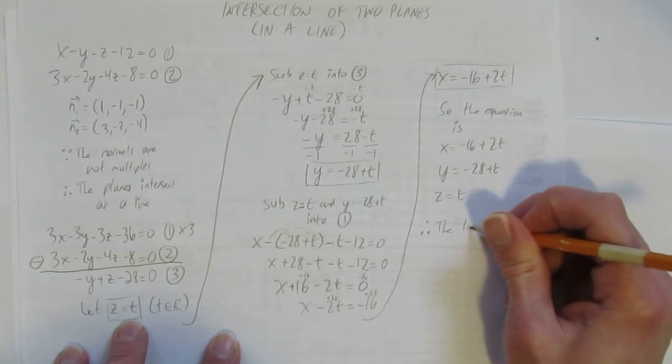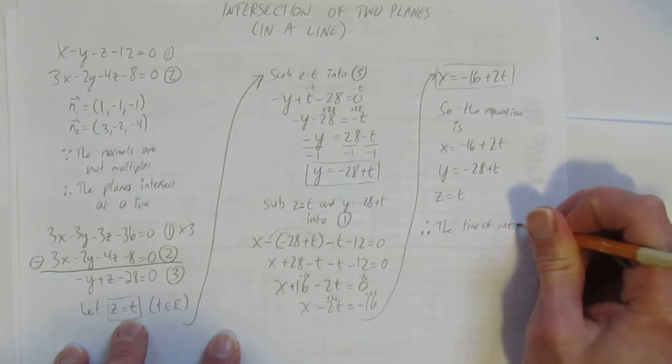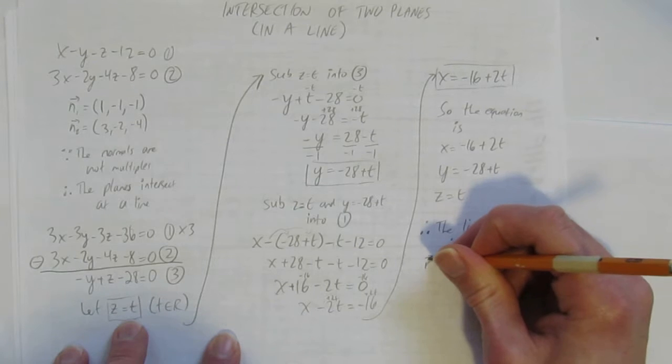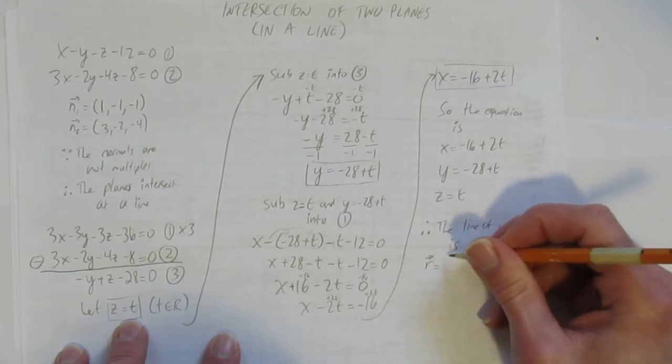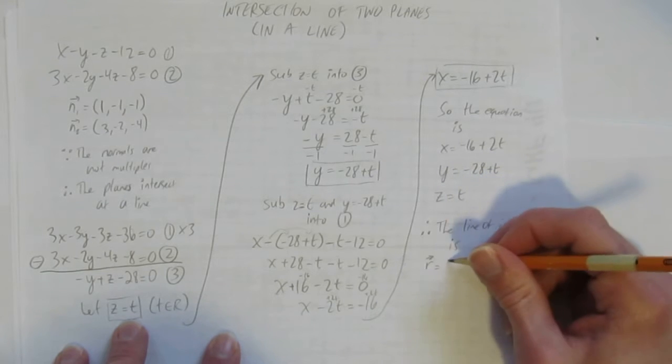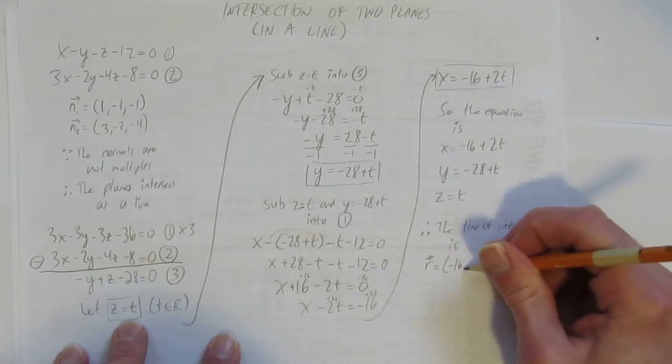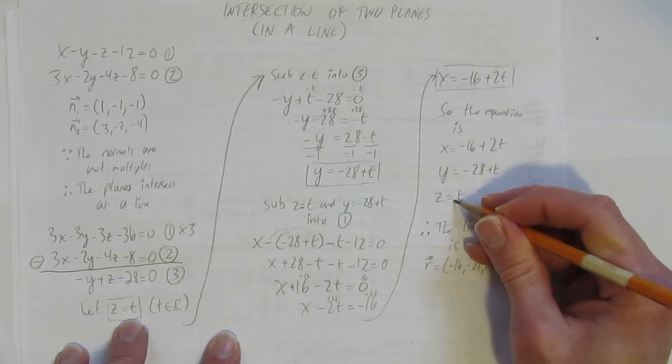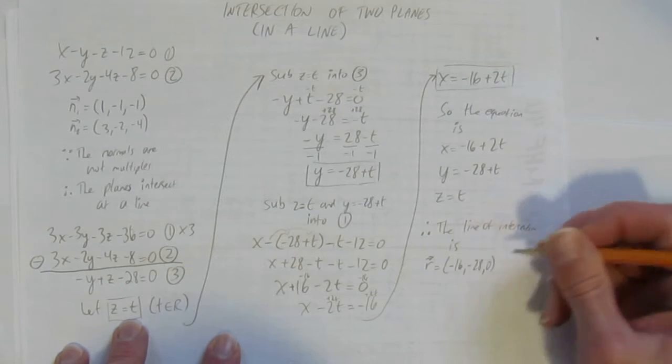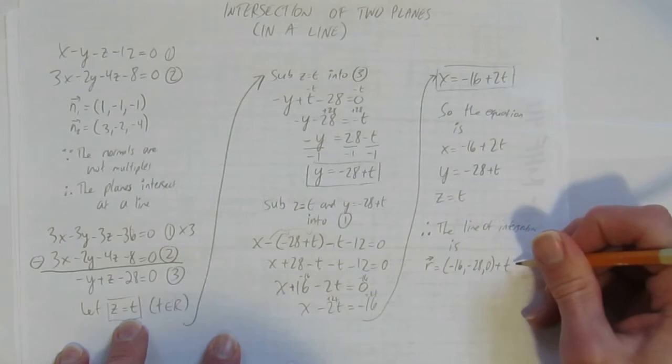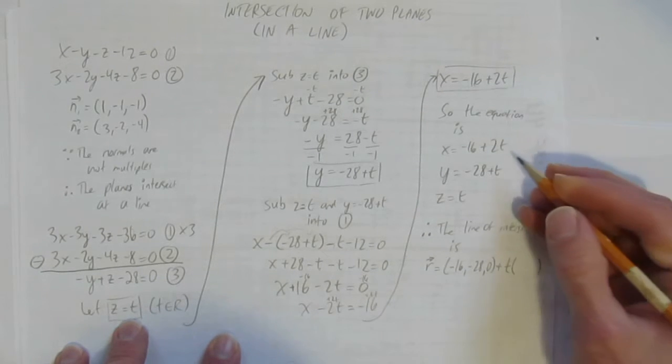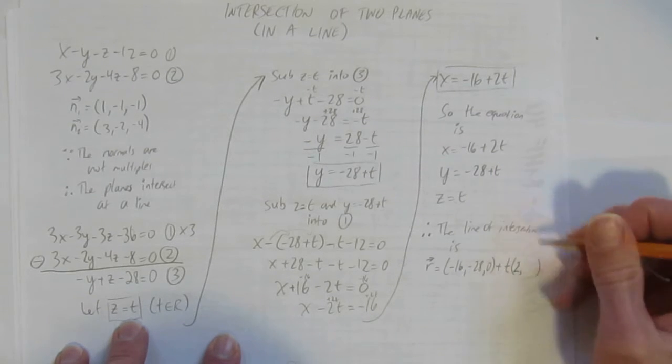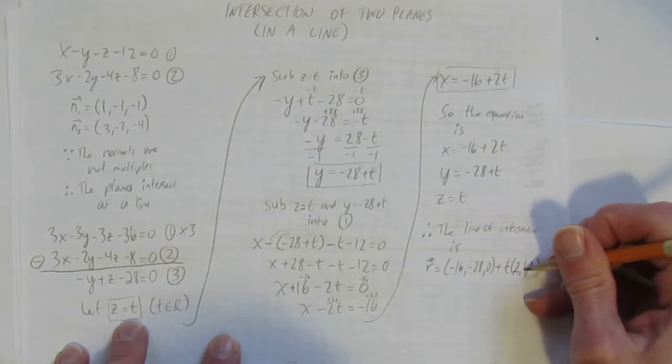The line of intersection is. And I'm going to write it as an equation, so it's a vector equation. I'll call it r. And so my r vector is the points. So the initial constants, which is negative 16, negative 28, and zero. Look. There's nothing here. There's just a zero. Plus t, the parameter that I used, times the direction vector. That's the coefficients here, which is 2, a 1, and a 1. And I'm done.